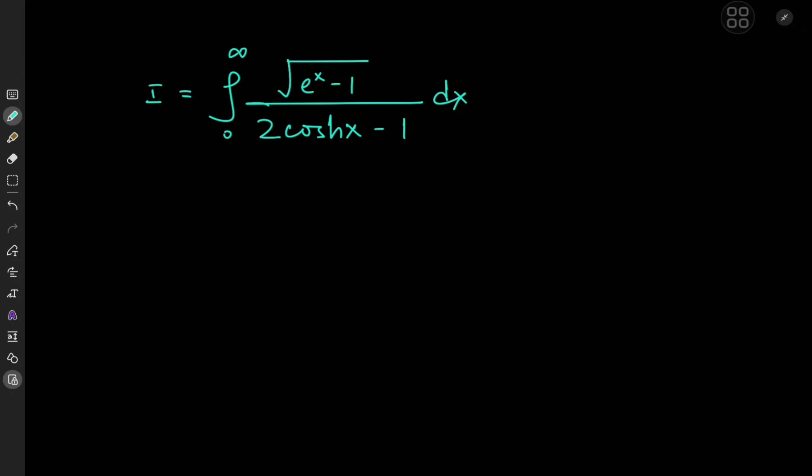Greetings, goated math community on YouTube. Today we have a very interesting integral. It's the integral from 0 to infinity of root e to the x minus 1 divided by 2 times the hyperbolic cosine, or the cosh of x minus 1.